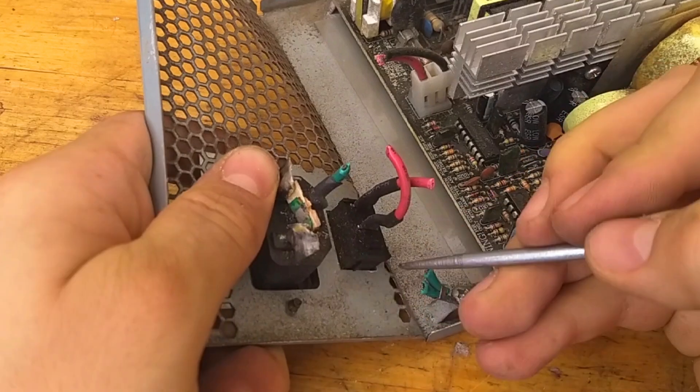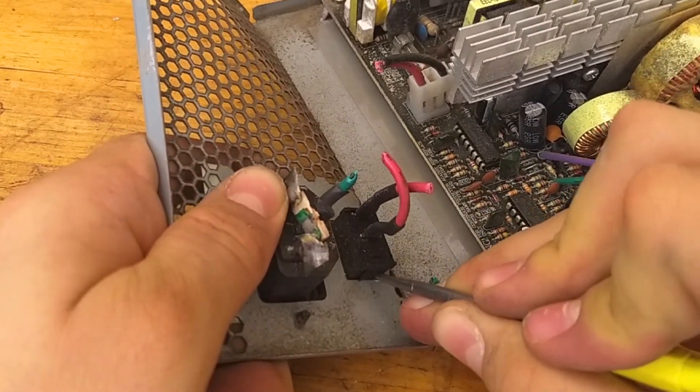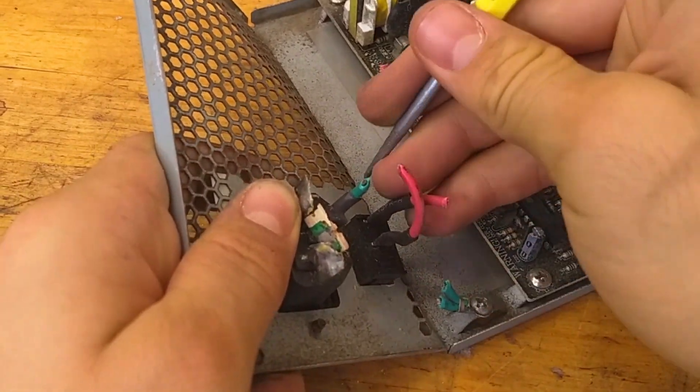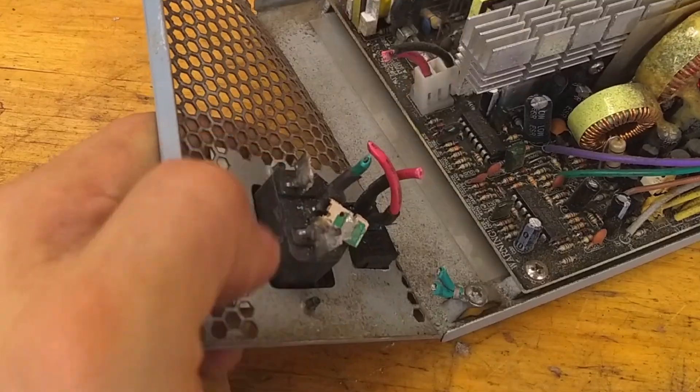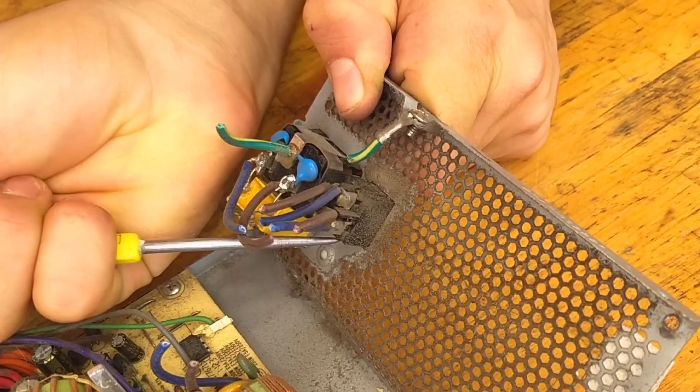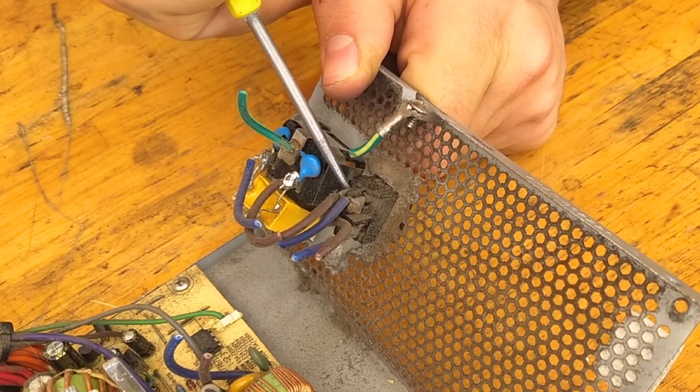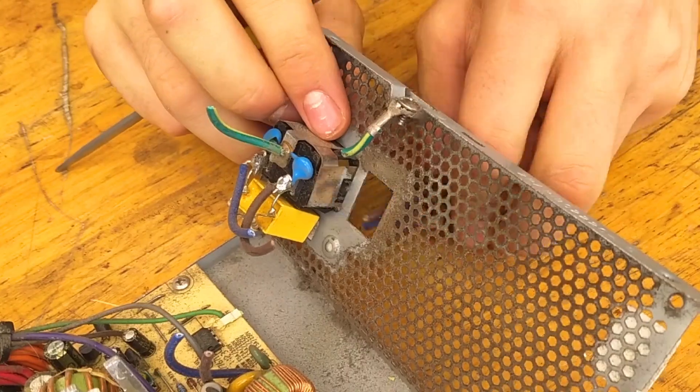I love scavenging ATX power supplies for their heavy-duty switches. However, pushing them out of the enclosure is quite difficult due to the springy tabs that keep them in place. An ice pick is great for poking these tabs to bend them back, as well as expanding them later in their new enclosure.